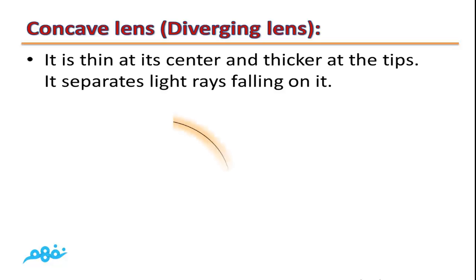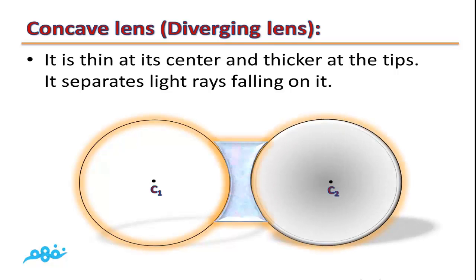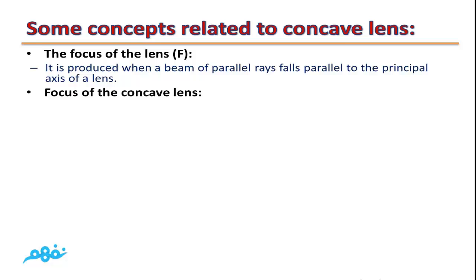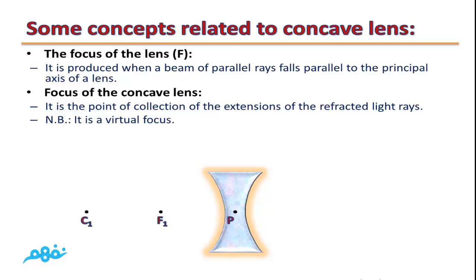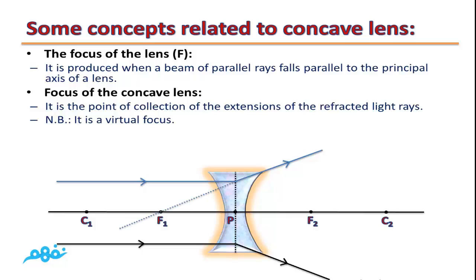Concave lens, or diverging lens: it is thin at its center and thicker at the edges. It separates light rays falling on it. The focus of the concave lens is the point of collection of the extensions of the refracted light rays. Because it diverges the light, the extensions of the rays are collected in a virtual focus, which is virtual because it results from the extensions of refracted rays, not the rays themselves.